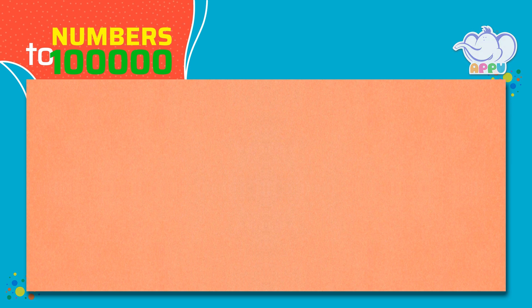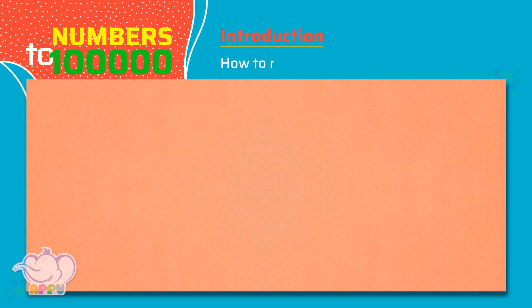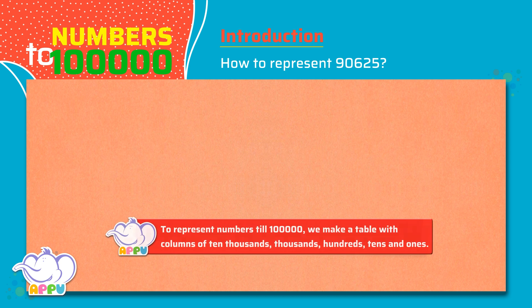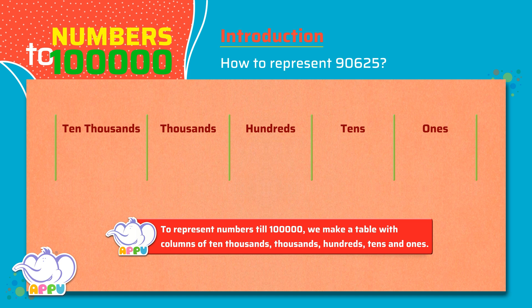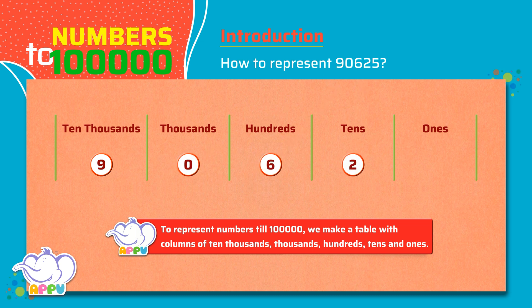Let's see another example. How to represent 90,625. To represent a 5-digit number, we make a table of ten thousands, thousands, hundreds, tens, and ones. So, 90,625 can be represented as nine ten thousands, zero thousands, six hundreds, two tens, and five ones.